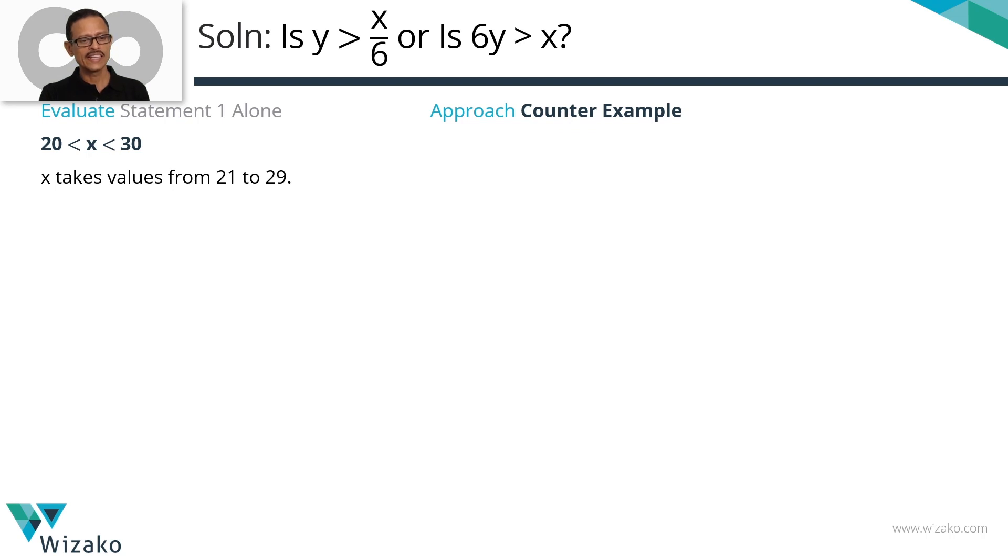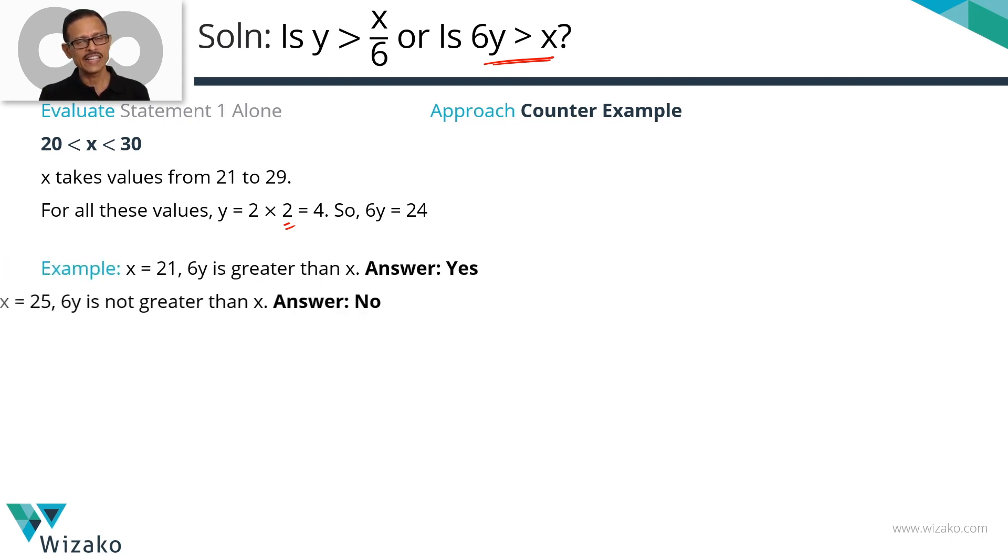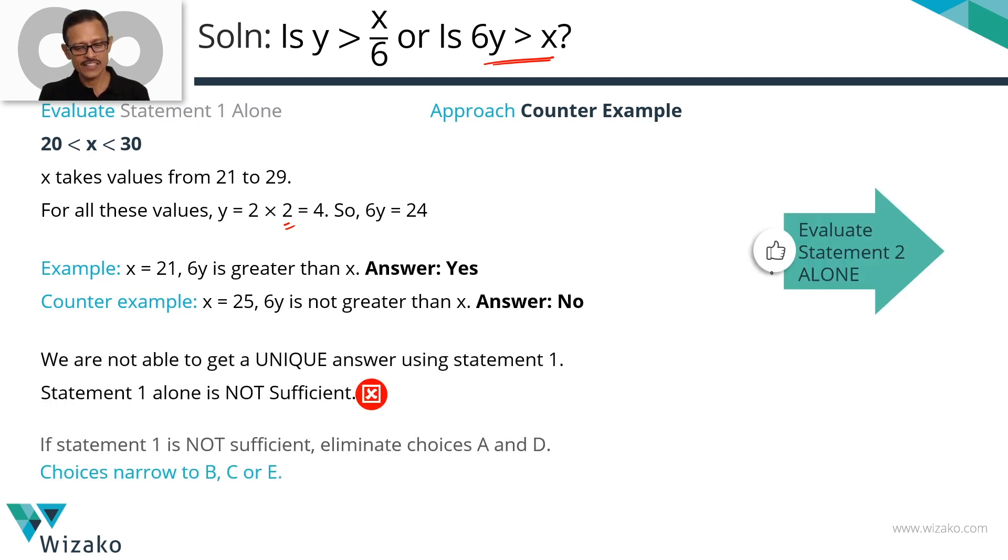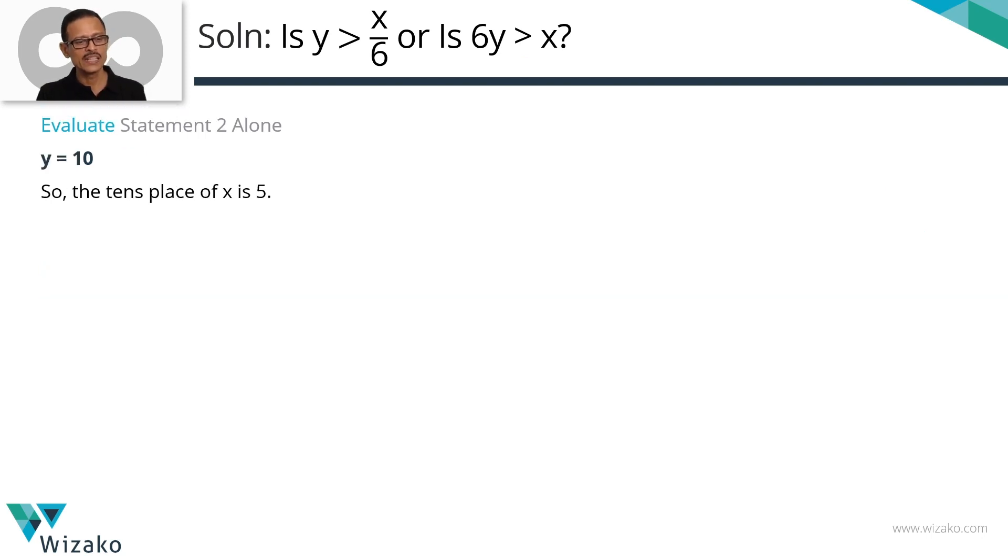Summarize it before we go to statement 2. We're looking at counter example. X takes values from 21 to 29. In all of these cases, Y will be equal to 2 times the tens place which is 4. So 6Y equals 24. We need to determine whether 6Y is greater than X. If you take X to be 21, the answer is yes. If you take X to be 25 or 26, the answer is no. Get a counter example. So statement 1 alone is not sufficient. Eliminate answer options A, D. We're down to B, C or E. Let's evaluate statement 2 alone. So we summarized statement 1. Let's move on to statement 2.